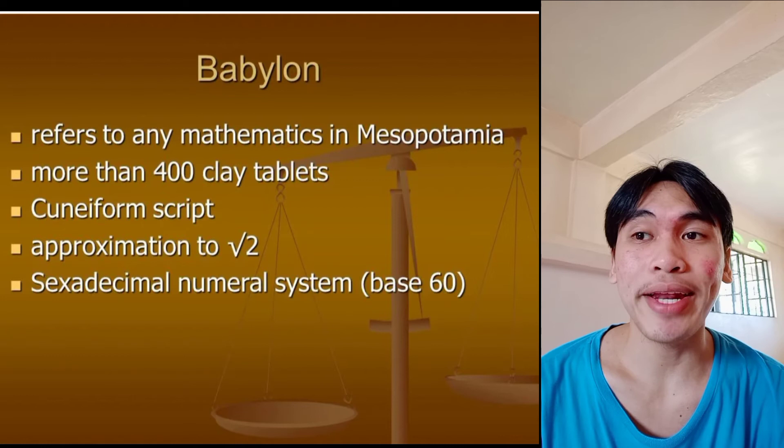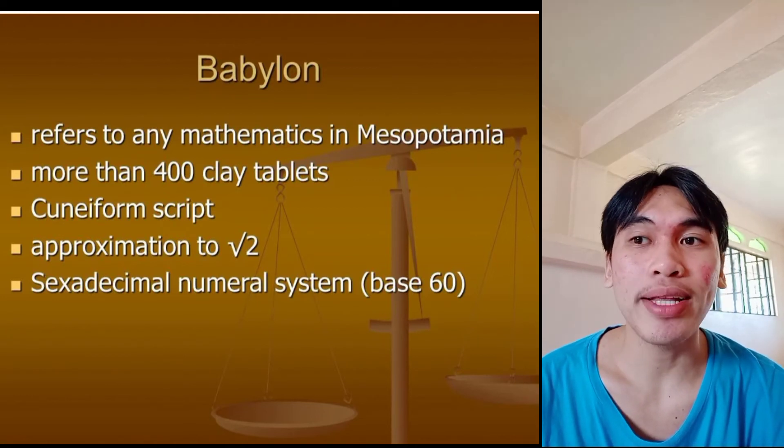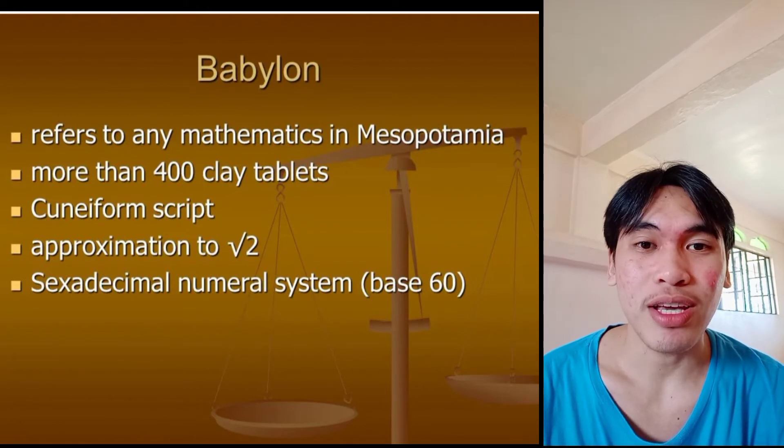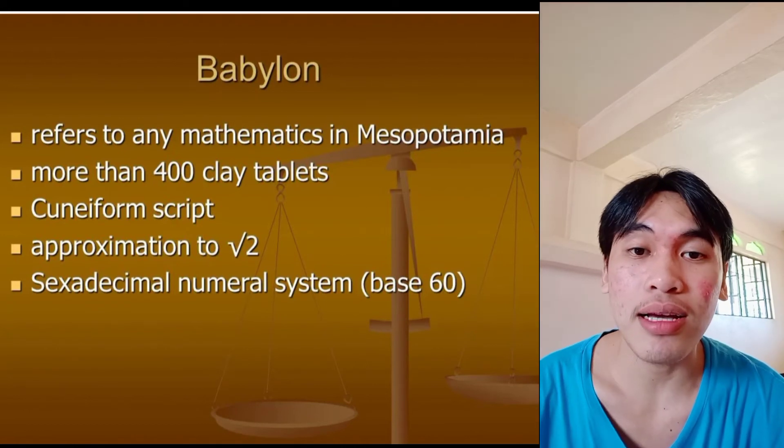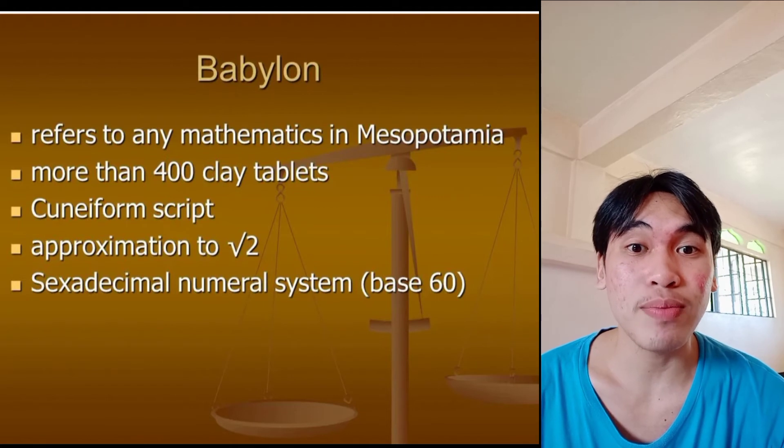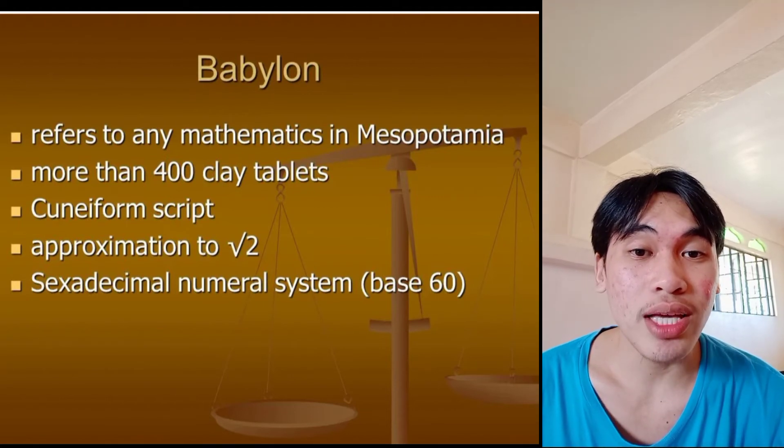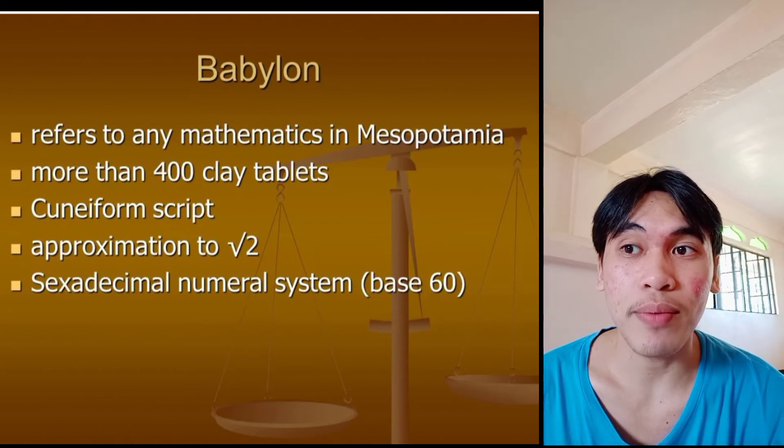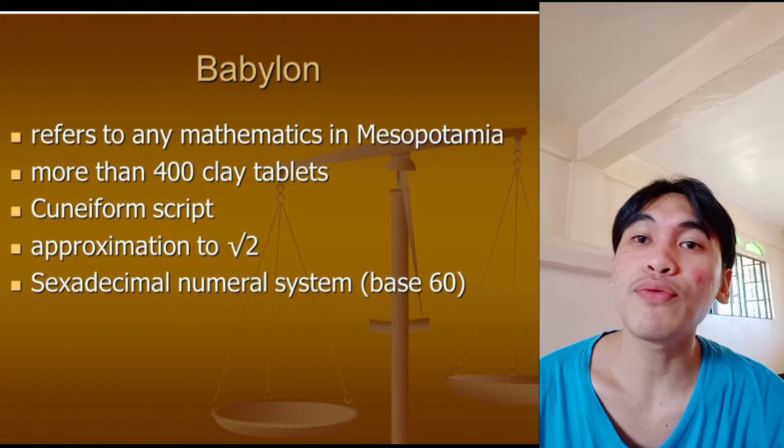It refers to any mathematics in Mesopotamia. It's more than 400 clay tablets, and it's a cuneiform script. The link of Module 1 is in the descriptions below. That is related to this Module 2, which is Module 1 in ancient Egypt, which they use a hieroglyphic script. But in Babylonians, they use a cuneiform script.